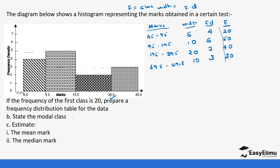The modal class is the one that has the highest frequency. The highest frequency is 50, which belongs to the class 9.5 to 19.5. Using the original class boundaries, this corresponds to 10 to 19, so the modal class is 10 to 19.